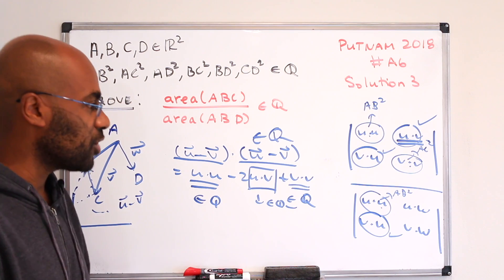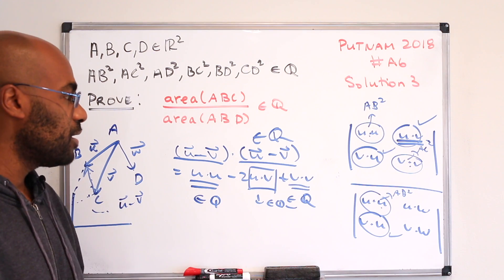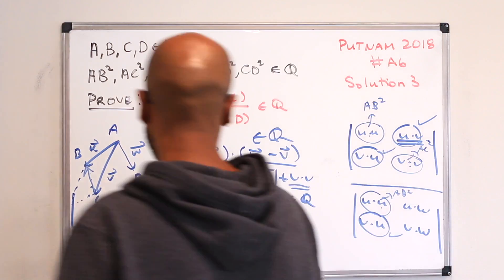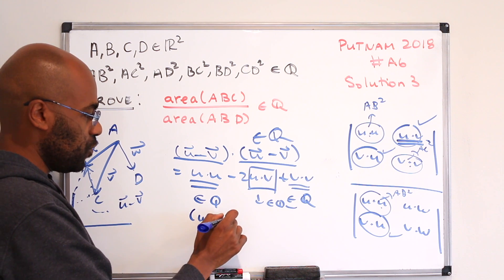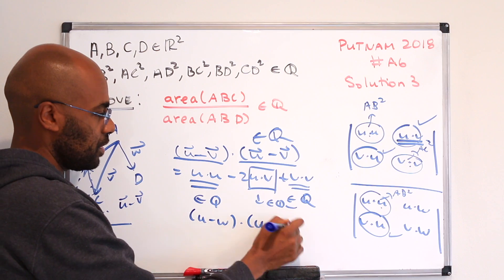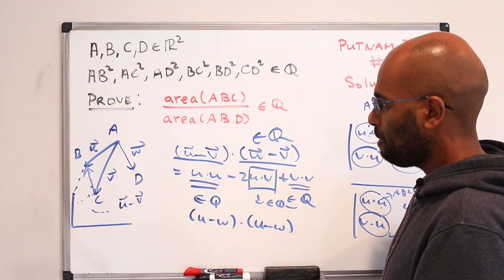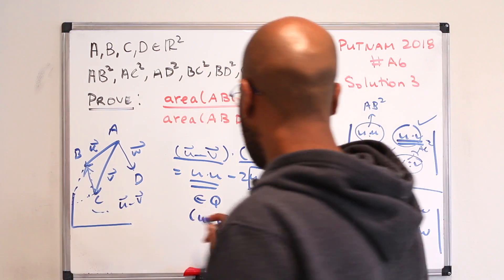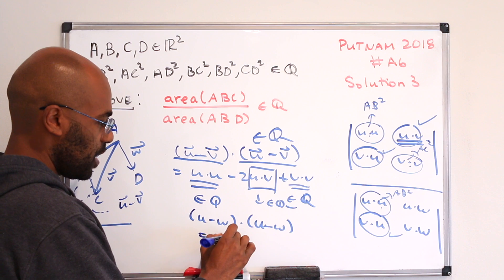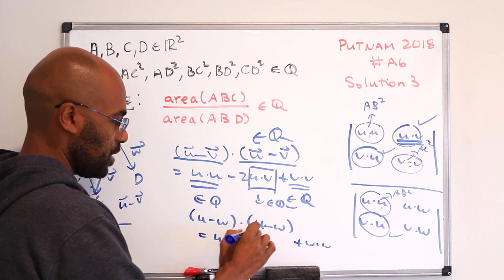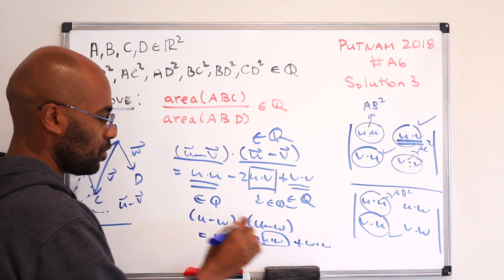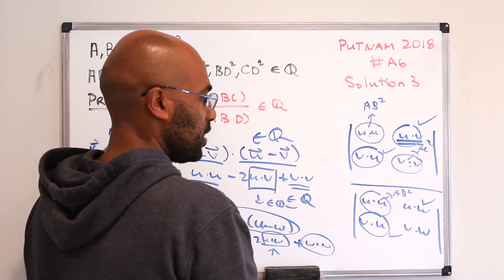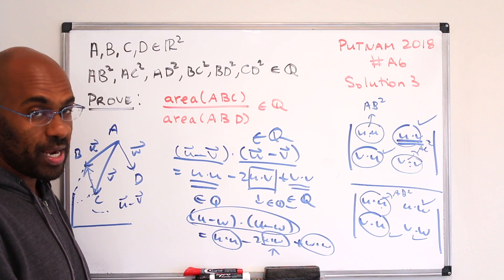We can use a similar argument to prove the remaining expressions are rational. To establish that U·W is rational, we look at the triangle with A, B, and D and compute (U minus W)·(U minus W) = U·U minus 2(U·W) plus W·W. Using the fact that the square of BD's length is rational, along with U·U and W·W being rational, we get that U·W is rational. A similar argument with the last triangle gives us that V·W is rational as well.